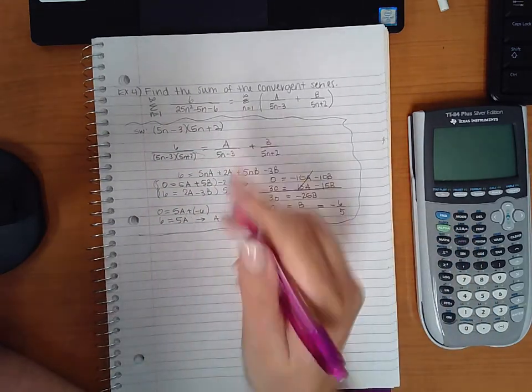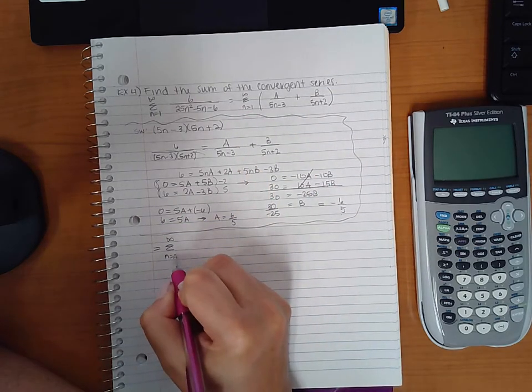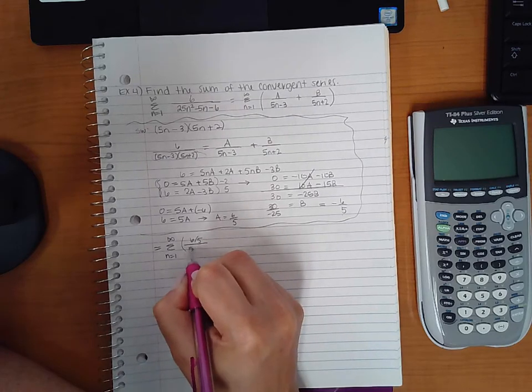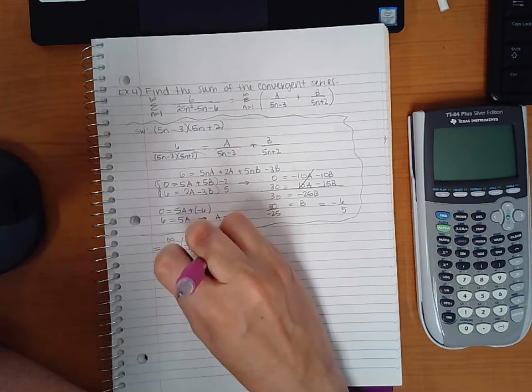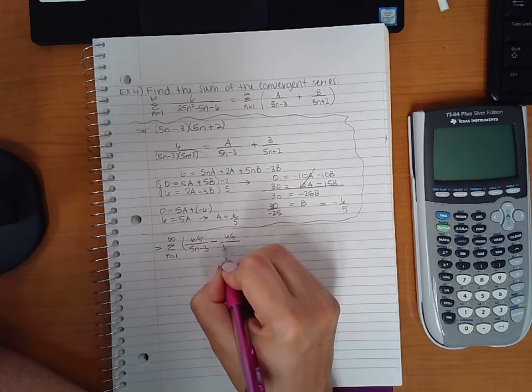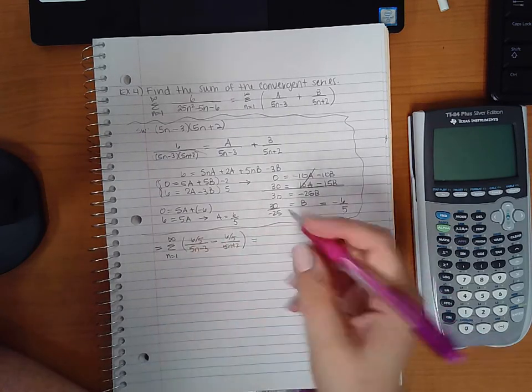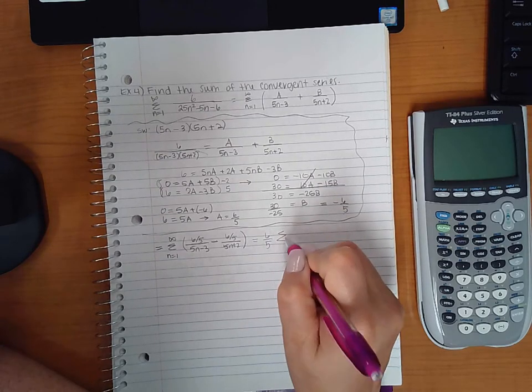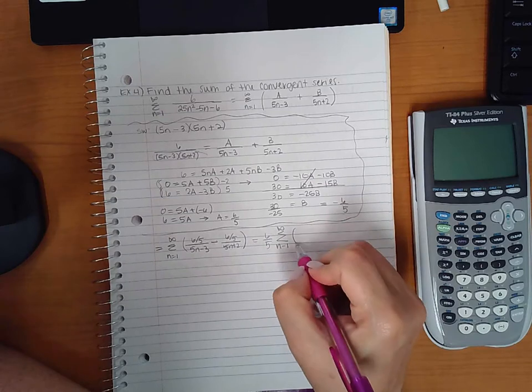So my summation, my series, will become 6 fifths over 5n minus 3 minus 6 fifths over 5n plus 2. Now I can factor out that 6 fifths and factor it completely out of the series, so that I just have 6 fifths times this series.